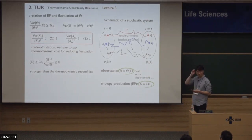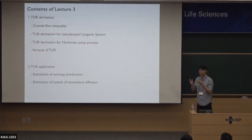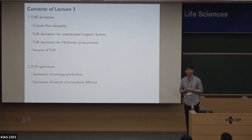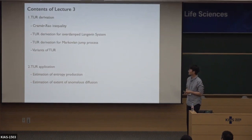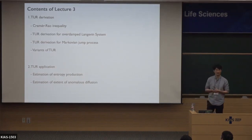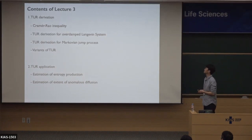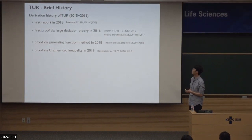In lecture three, I will talk about TUR. In the first section, I'll discuss how to derive TUR for both the overdamped Langevin system and the Markov jump process. In the second section, I'll discuss how to apply TUR to experimental systems. This is a brief history of TUR discovery — it was first reported in 2015, just seven years ago. In that paper they discovered TUR but could not derive it. One year later, another group first derived TUR using large deviation theory, which we learned this morning in Vipul's lecture.